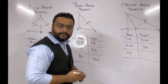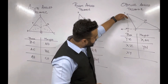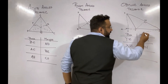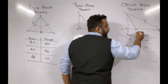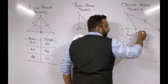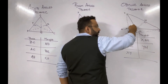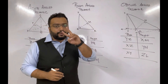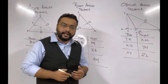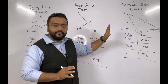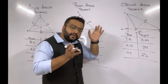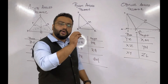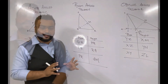Now consider side XY as the base. The opposite vertex is Z. If we draw a perpendicular from Z it falls in the exterior of the triangle, so we need to extend the base. We name the foot L, so for base XY the corresponding height is ZL. Remember: in an obtuse angle triangle, for the base along the obtuse angle the height is inside the triangle, but for the other two bases you need to extend the base to get the corresponding height.